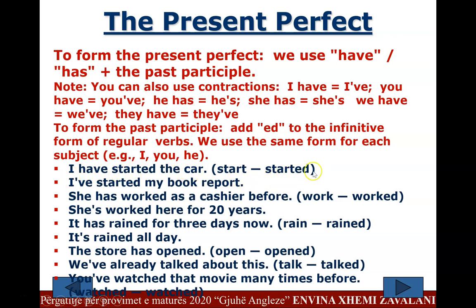Examples: 'I have started the car' — started. 'She has worked as a cashier before' — worked. The change happens only in the auxiliary verb; the main verb stays the same across all persons. 'She's worked here for 20 years.' 'It has rained all day.' 'The store has opened.' 'We have already talked about this.' 'You have watched that movie many times before.'